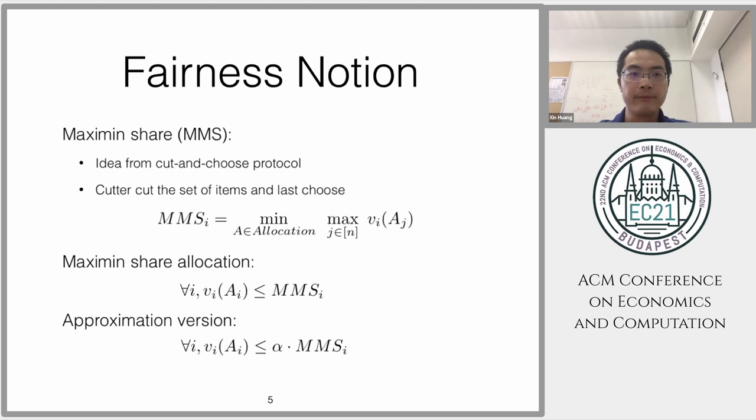To overcome this difficulty, we study the maximum share, which is like a cut and choose protocol. There's a cutter who cuts the chores into bundles, and because you are the cutter, you may get the worst bundle since you are the last one to choose. The cutter will try to minimize this value. If you look at the formula, it's a min-max because we use positive valuation. If you define the valuation by negative, then this formula will be the max-min.